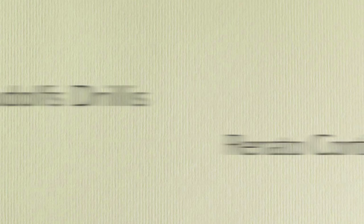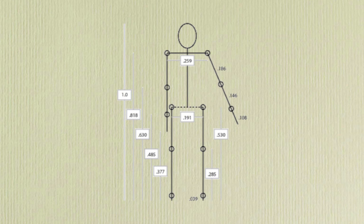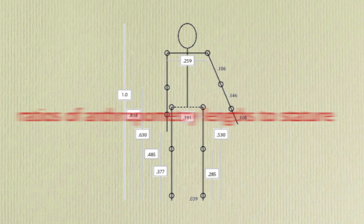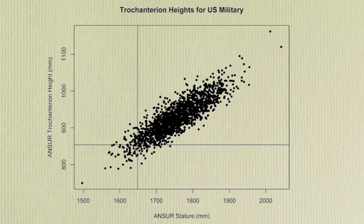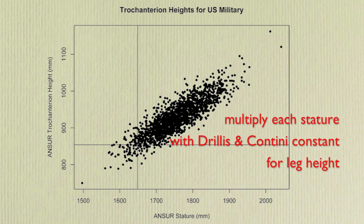One easy method of predicting a user's anthropometry based on their stature is to use proportionality constants. Drillis and Cantini published a set of constants in 1966, which can be seen in this figure. Proportionality constants are ratios of anthropometry lengths to stature, and they are simple and quick to use. In order to find leg lengths for our NHANES statures, we simply multiply each stature with the Drillis and Cantini constant for leg height.